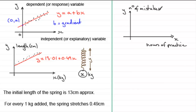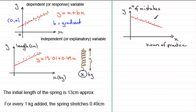As expected, the scatter diagram shows that the more hours of practice, the fewer mistakes are made — the data trends downward. The regression line reflects this negative relationship, and suppose the equation turns out to be y equals 19.8 minus 2.1x. We now need to give an interpretation for 19.8 and 2.1 in context.